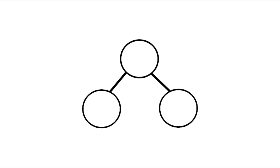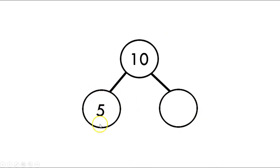Now we're going to move on to our number bonds. You may remember these from kindergarten and first grade — we're going to continue doing number bonds again this year. We need to make 10. Our first number bond has 5 as one part. This top number is the whole, so 5 plus what equals 10? Let's count: 5, 6, 7, 8, 9, 10 — that's 5 more.